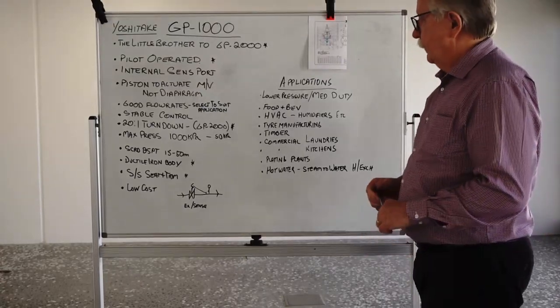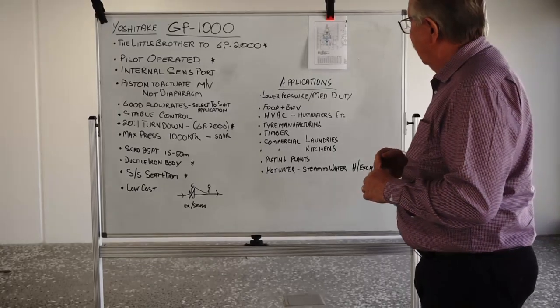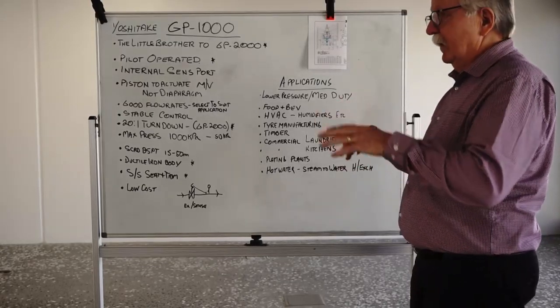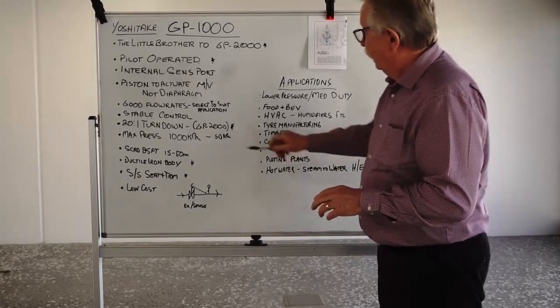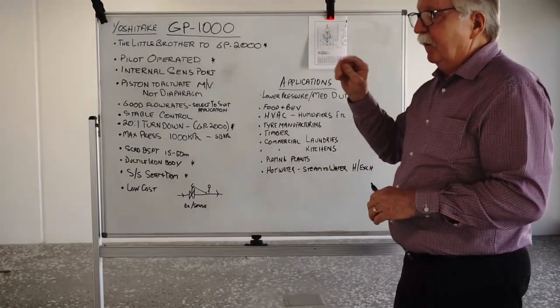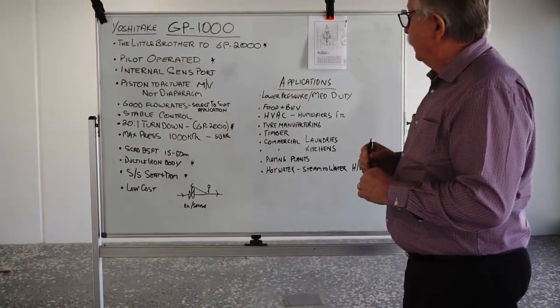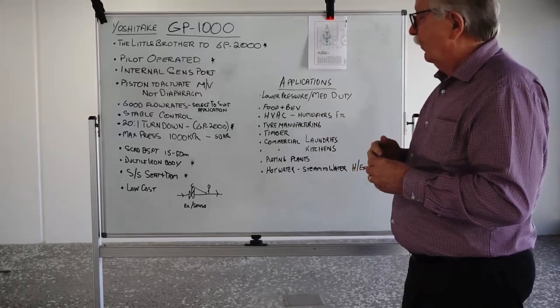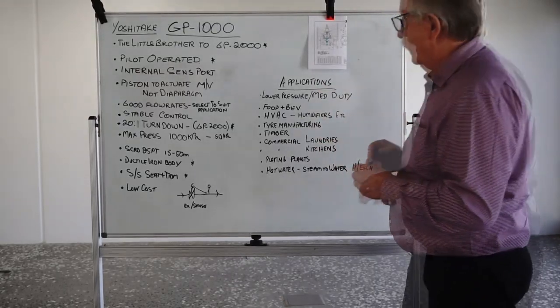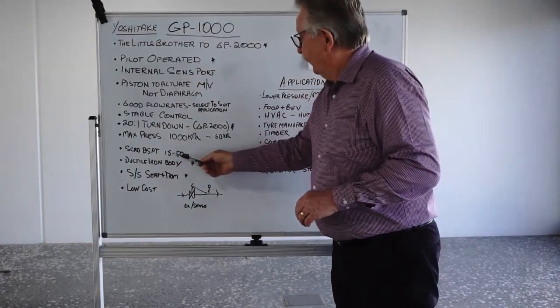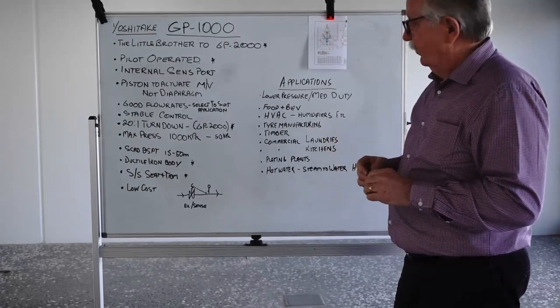And with very little offset depending on the flow rate. So if the flow rate goes from low flow to maximum flow, the set point may vary by 20 kPa, something like that, just depending on what your flow rates might be until it balances out and gets itself sorted. They are screwed BSPT 15 to 50, the ones that we have in stock, or all sizes in stock.